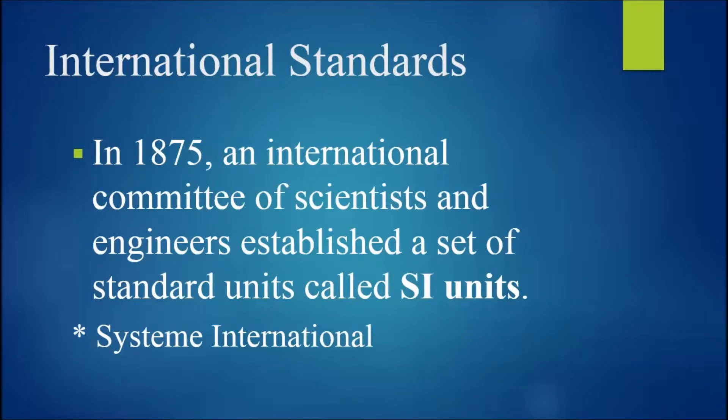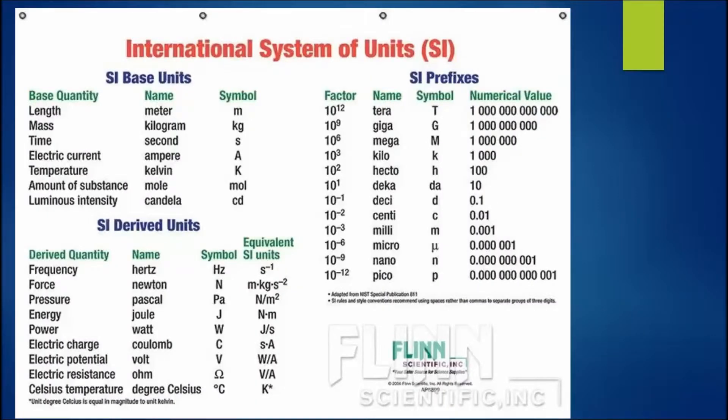So, in 1875, an international committee of scientists and engineers established a set of standard units called SI units, where SI stands for International System and is from the French Système Internationale. Now, at this convention, there were seven physical quantities identified as fundamental: length, time, electric current, temperature, the amount of substance, and luminous intensity.